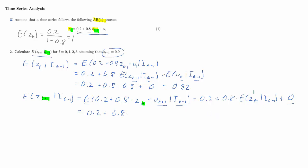So we have 0.2 plus 0.8 times the conditional expectation of Zt given I_{t-1}, which is highlighted in blue — and that is exactly what we calculated before: 0.92. We take that value from the first step and use it in the two-step-ahead forecast. Doing the calculations, we get 0.936.